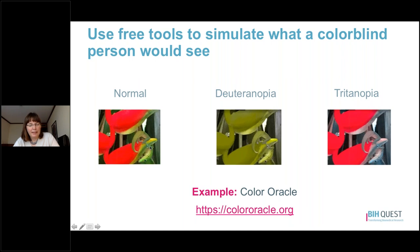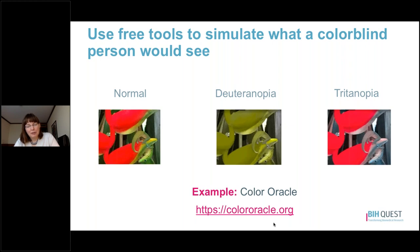For example, a red-green color combination is bad for people with deuteranopia, the most common form of colorblindness, because those two colors look the same. One free tool you can use is Color Oracle. You can download it in about 30 seconds and it installs a color wheel on your menu bar. You simply click a button and select a form of colorblindness to change the colors on your screen to simulate what someone with that condition would see.